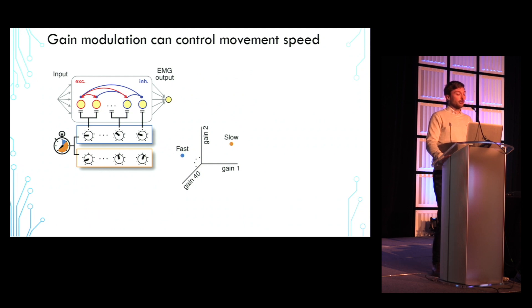You can imagine the gain patterns for the fast and slow variants sitting in a 40-dimensional gain space because we have 40 independent modulatory units, where, for example, gain 1 here on this axis might correspond to the gain of neurons in one group, and gain 2 here might correspond to the gain of neurons in another group.